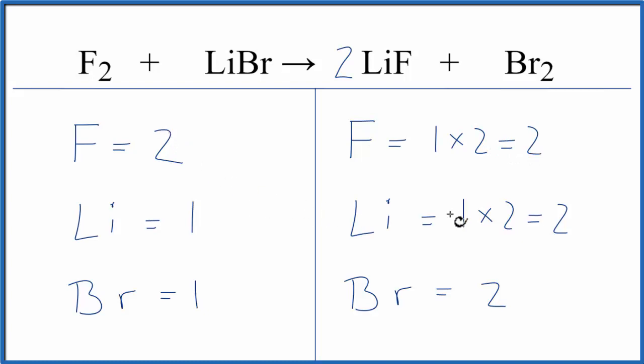So we fixed the F's, but the Li's are messed up, and we still need to fix the Br's. We can fix it though. We see that we need two Li's and two Br's, so we can put a coefficient in front of the LiBr.